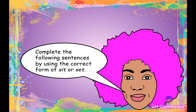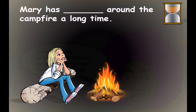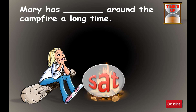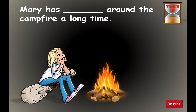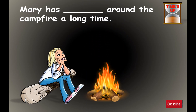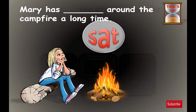Let's practice. Complete the following sentences using the correct form of sit or set. 'Mary has _____ around the campfire a long time.' The answer is 'sat' — Mary has sat around the campfire a long time.